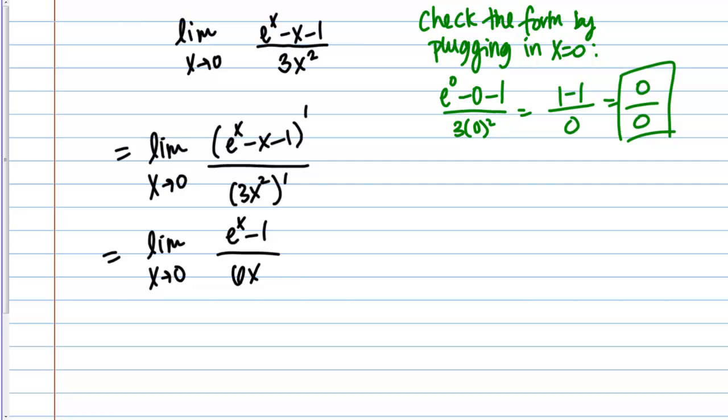This limit is going to be equivalent to the limit I started out with. Now let's check this out and see if we get a number or if we still get some sort of form. What if I plug in 0? I'm going to get E to the 0 minus 1 over 6 times 0. That still gives me the form 0 over 0.